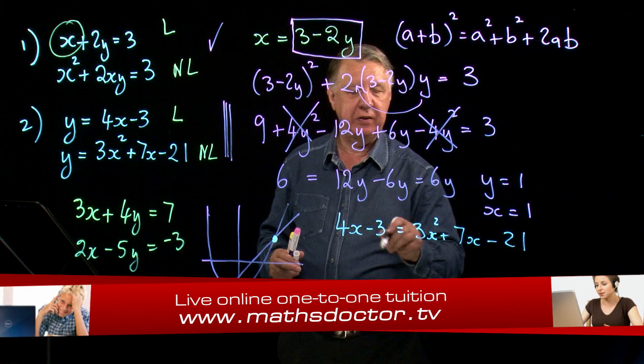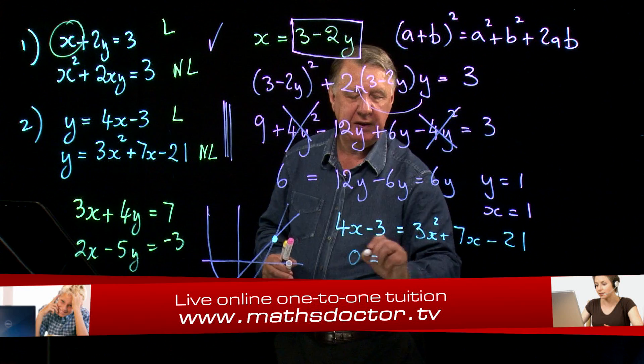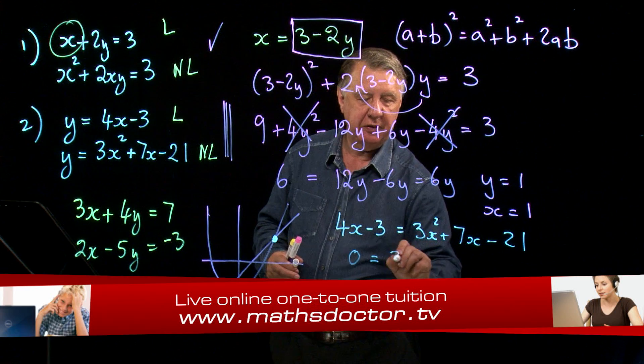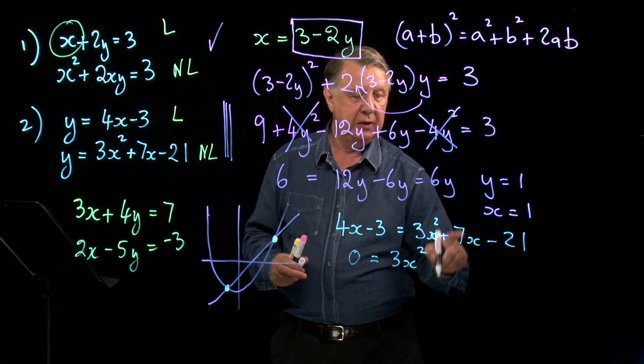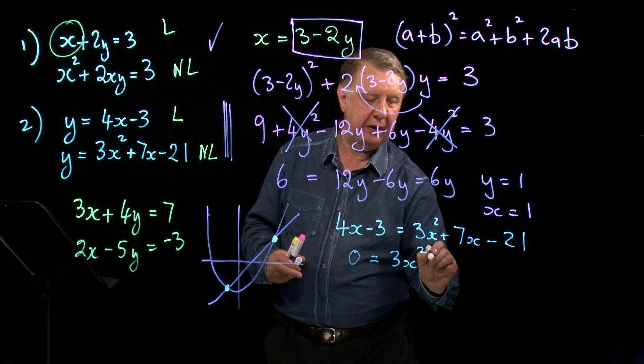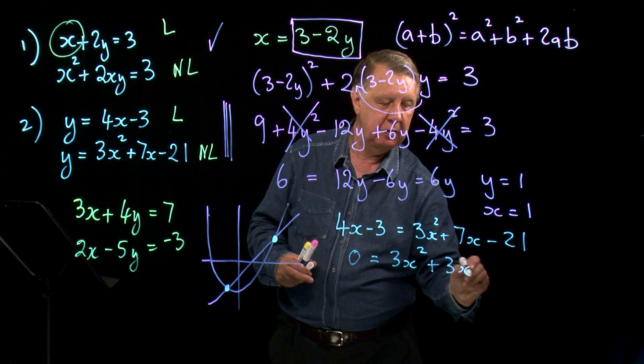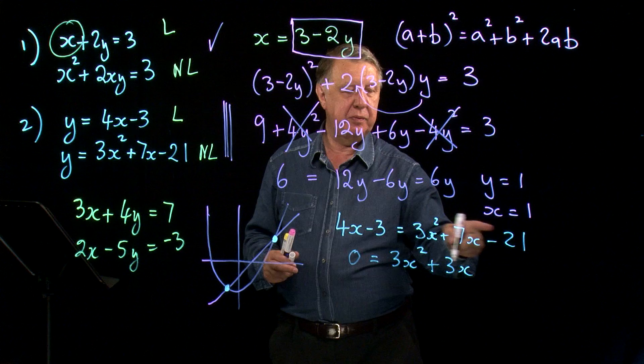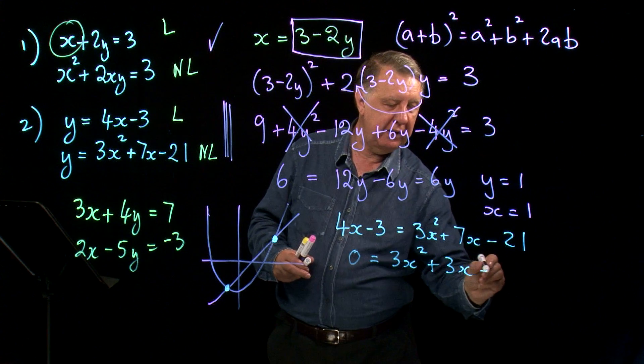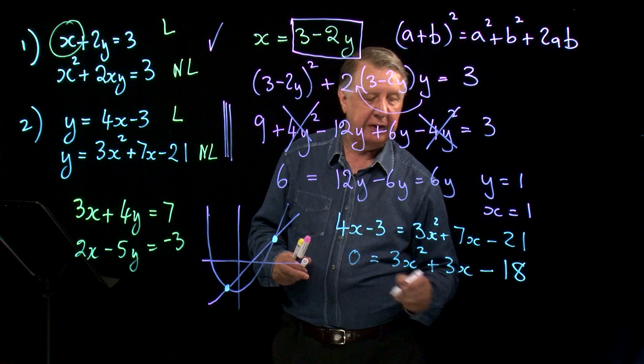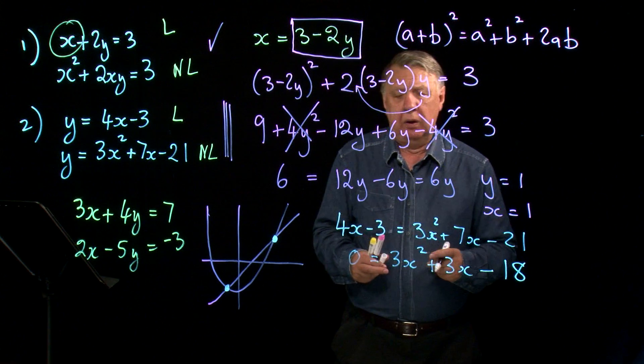Put all that onto one side. Let's put it onto the right. 3x², that's okay. 7x take away 4x is 3x. Negative 3 becomes positive 3 here and that's negative 18.